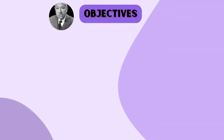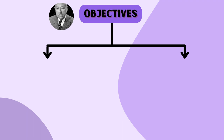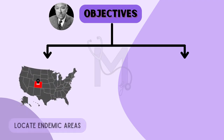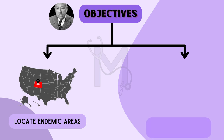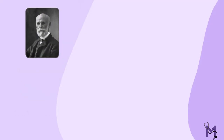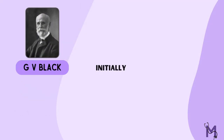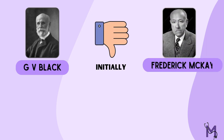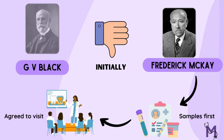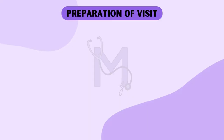At this point, Frederick McKay had two objectives. The first was to define the exact geographical area of the stain — that is, to locate the endemic areas. Second, he wanted to find a known dental researcher who would help him with his research. For this, he approached G.V. Black, who initially did not believe in McKay's theory. He asked McKay to send samples first and, based on that, agreed to visit the next annual meeting.